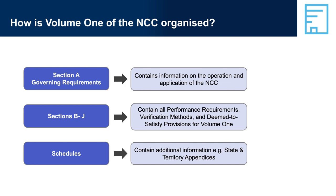Sections B to J include performance requirements, verification methods and DTS provisions for building structure, health, comfort and wellbeing, amenity, safety including fire safety, access and safe movement, a building's energy efficiency, a range of other aspects, and special building types. DTS provisions for Volume 1 often include specifications which provide detailed requirements for using some DTS provisions — they must be complied with when developing a DTS solution.